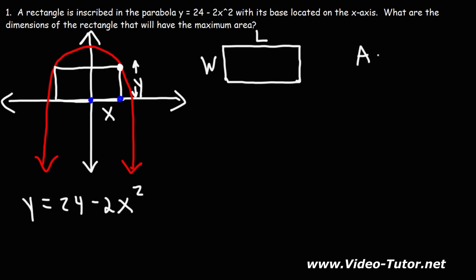We know that the area of a rectangle is equal to the length times the width. If this is x, this is also x. So the length of this rectangle is going to be 2x. The height is going to be y. So the area is going to equal 2x times y.